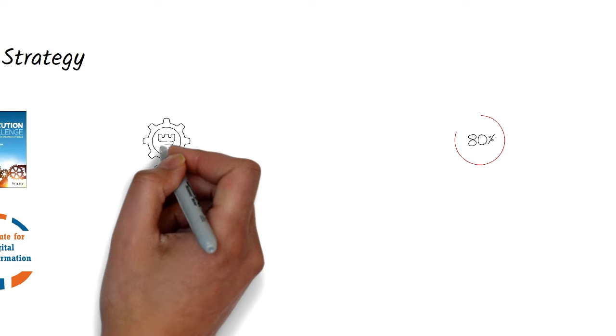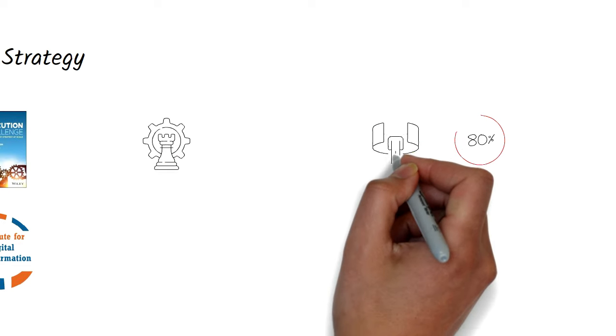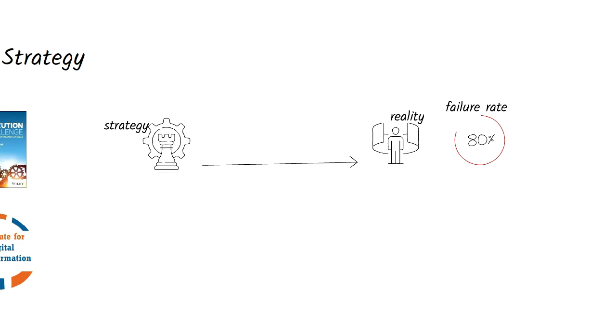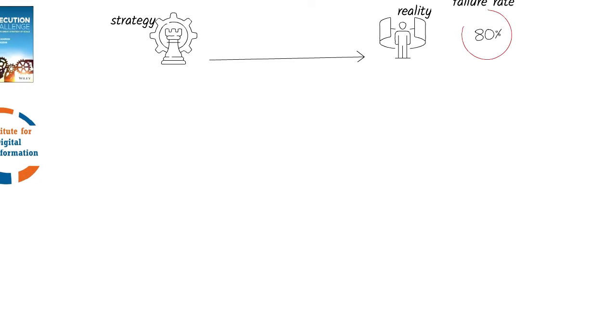Now, I've read statistics that more than 80% of strategies fail in the execution phase and don't achieve their desired results. Obviously, these failed strategies might be missing something big. Can you give us an idea of what that might be and why? Absolutely.